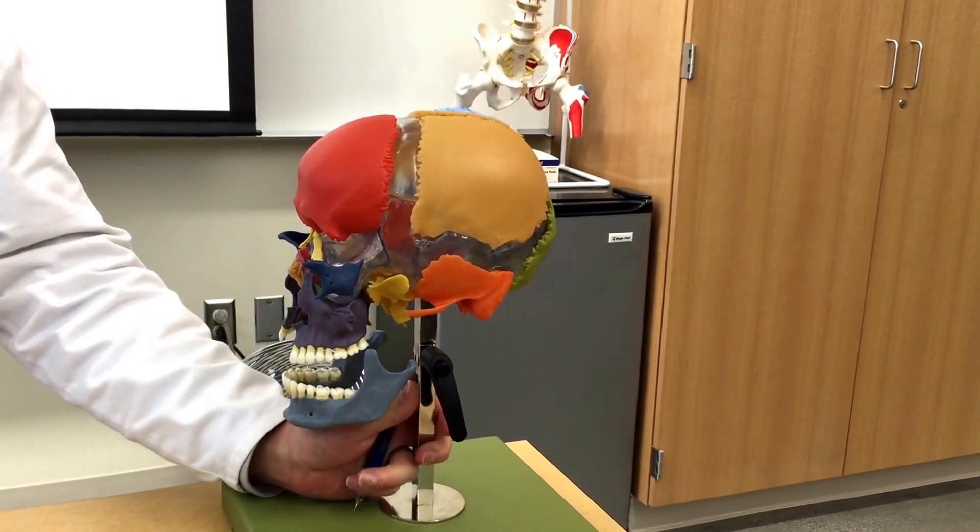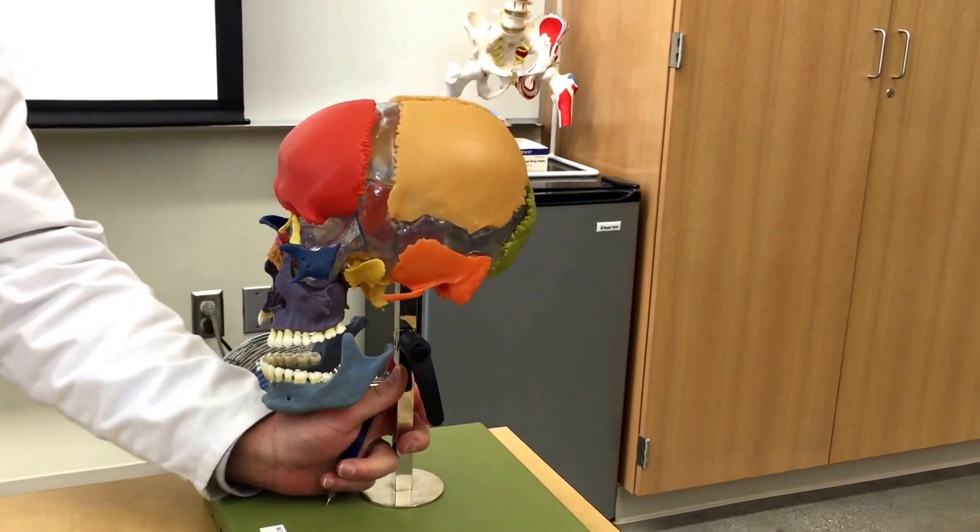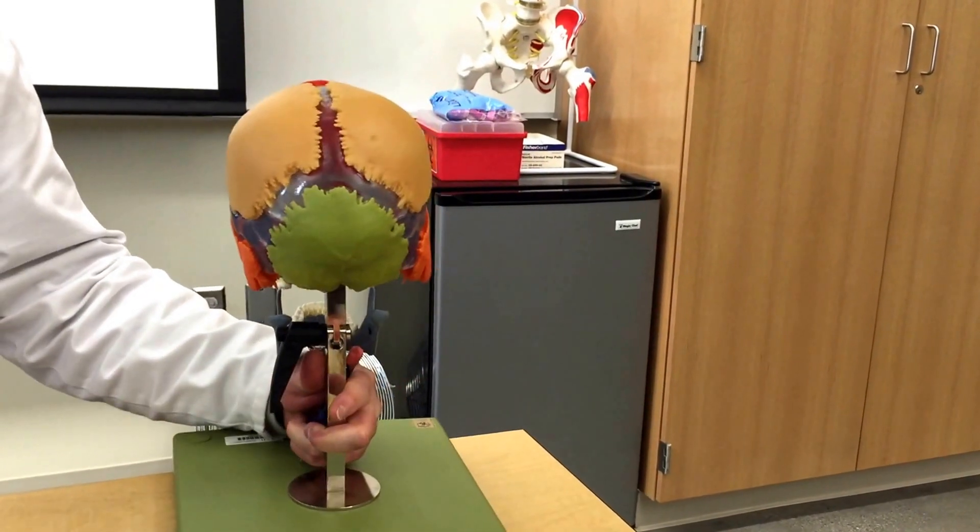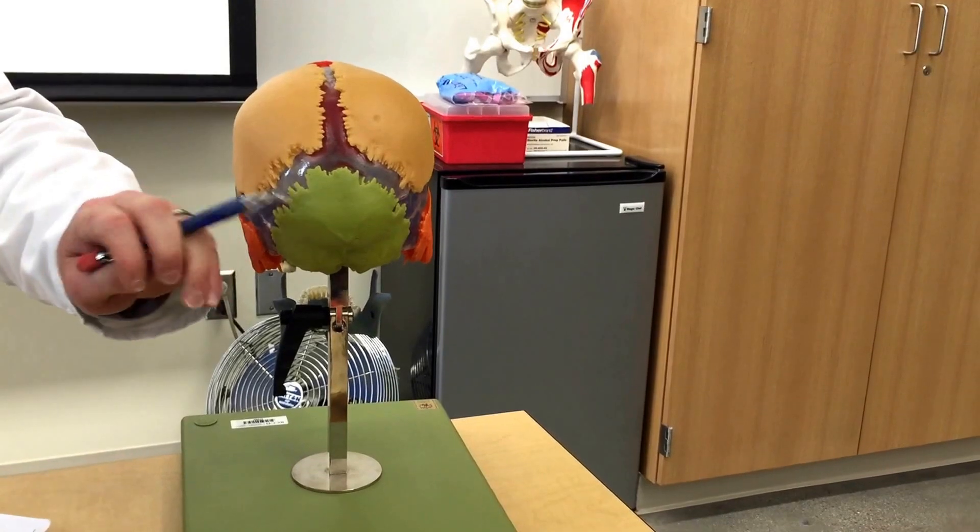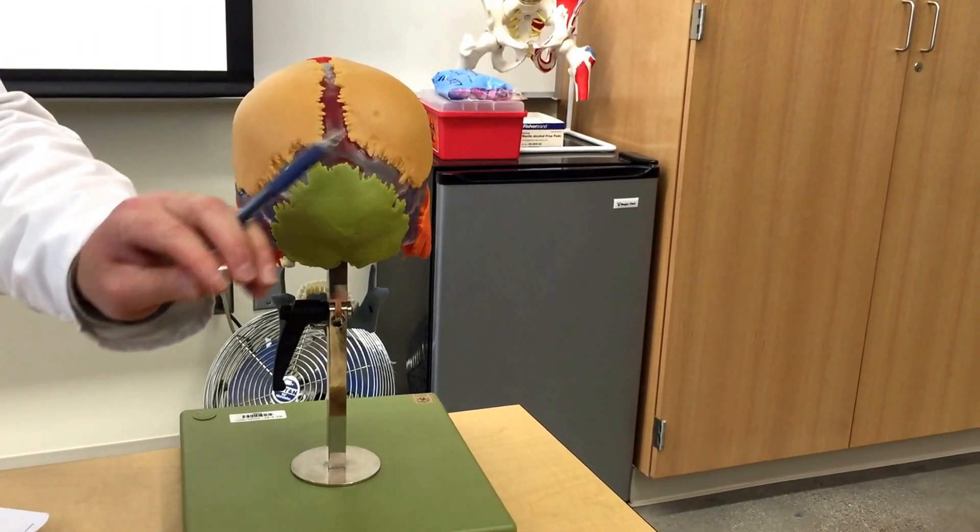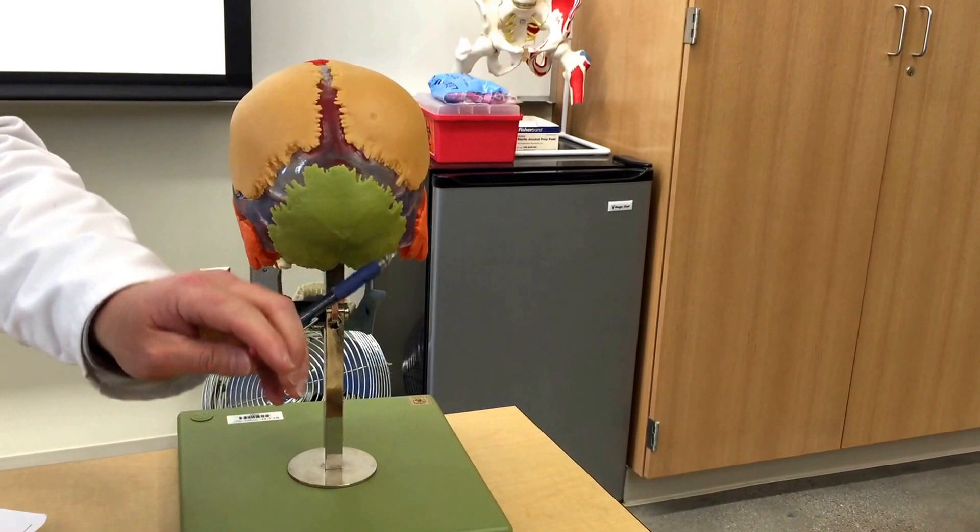As we move around, we'll go clockwise. We go to the back, this bone right here is the occipital bone and it's joined to the two parietals by the lambdoidal, L-A-M-B-D, lambdoidal suture.